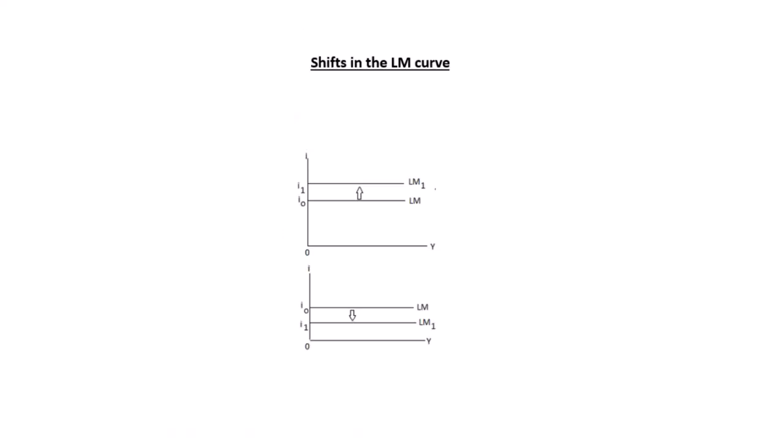What causes shifts in the LM curve? Your original LM curve is at interest rate I0. If there's an increase in your interest rates to I1, the LM curve shifts upwards to LM1. Changes in interest rates cause shifts in the LM curve. A higher interest rate will shift the LM curve upwards; a lower interest rate will cause a parallel downward shift. Remember: in the goods market, changes in interest rates cause movement along the IS curve, while changes in autonomous spending cause shifts in the IS curve. Here, your interest rates cause shifts in the LM curve.